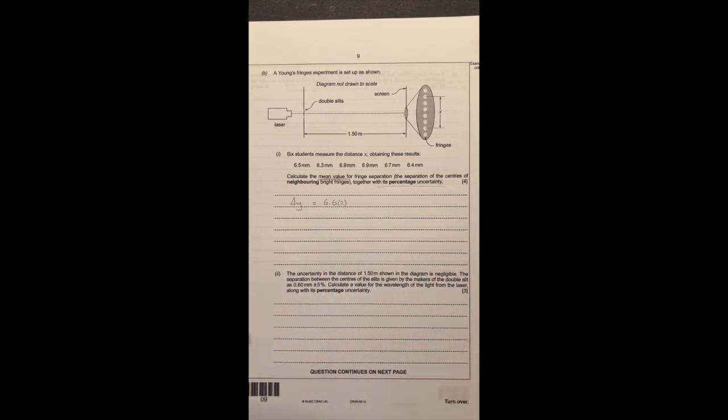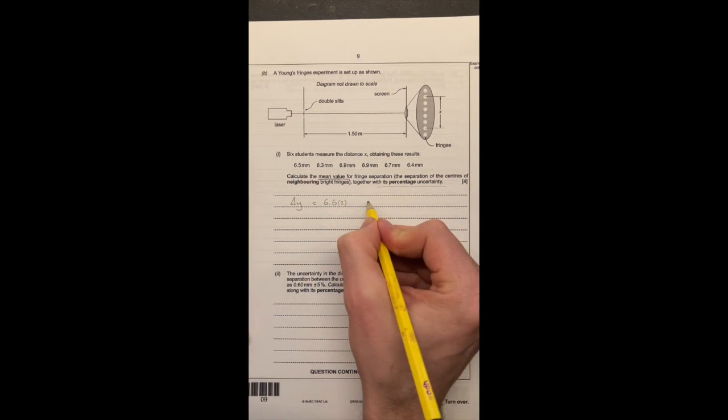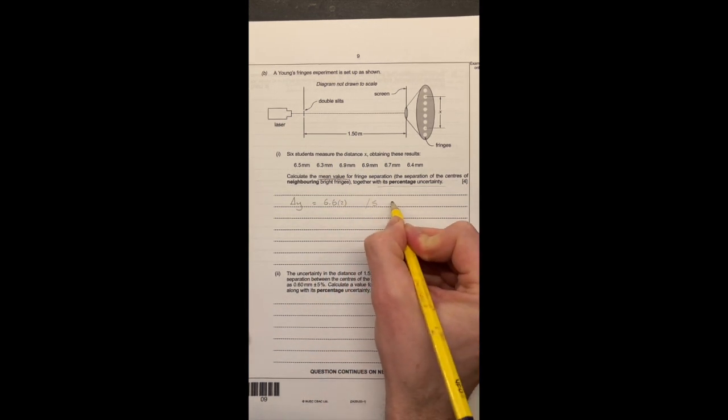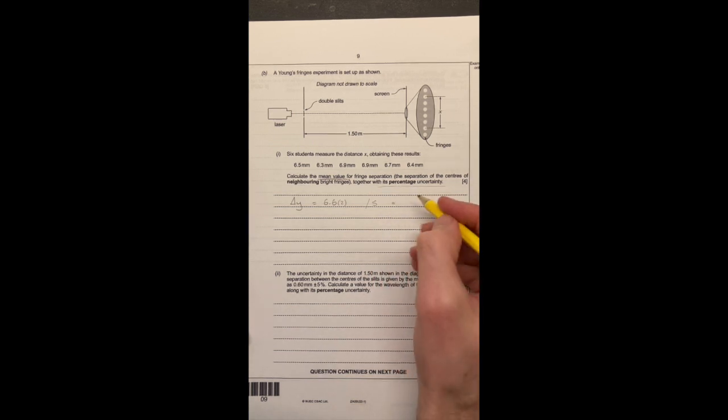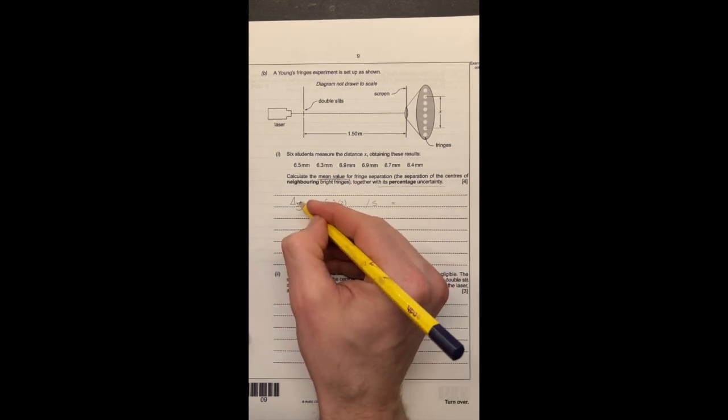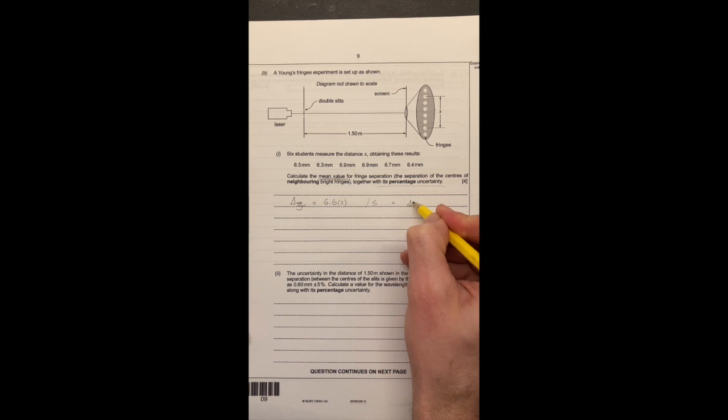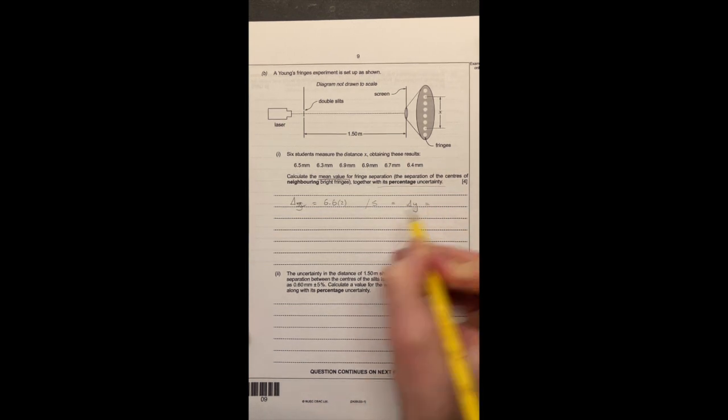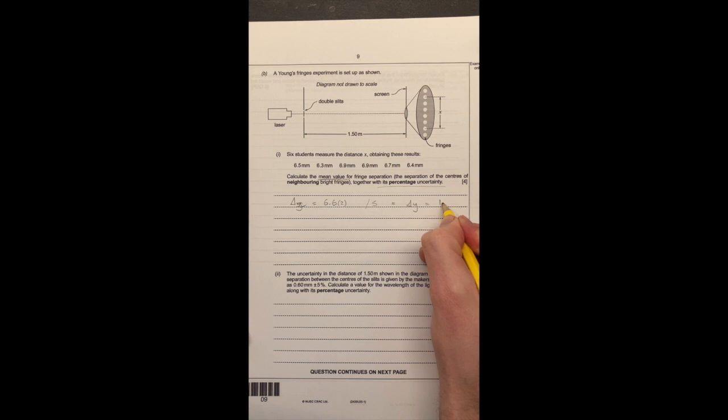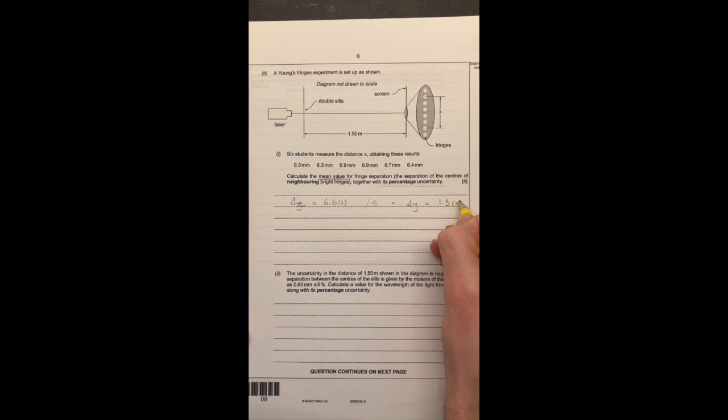But if you want you can round that off. We then need to divide that by 5 to give us the value for, sorry, really that should be x, shouldn't it? And then my fringe separation y will be 6.6 divided by 5, which is 1.3. And then if you want the extra significant figure, it's 2 on the end. And that's in millimeters.